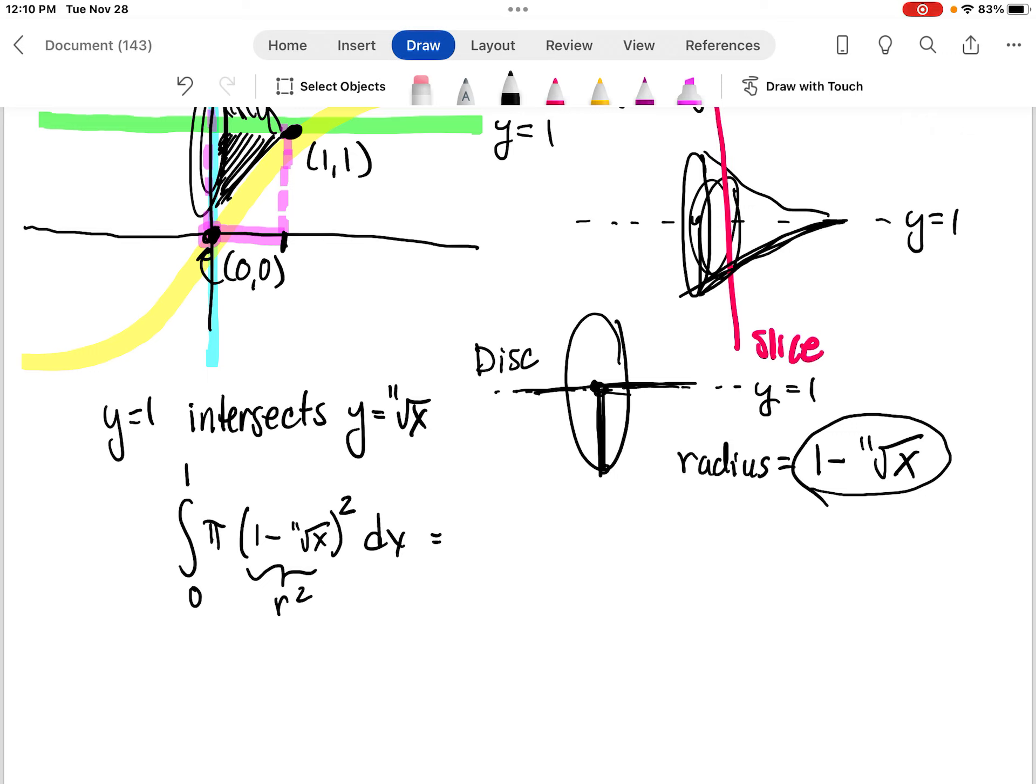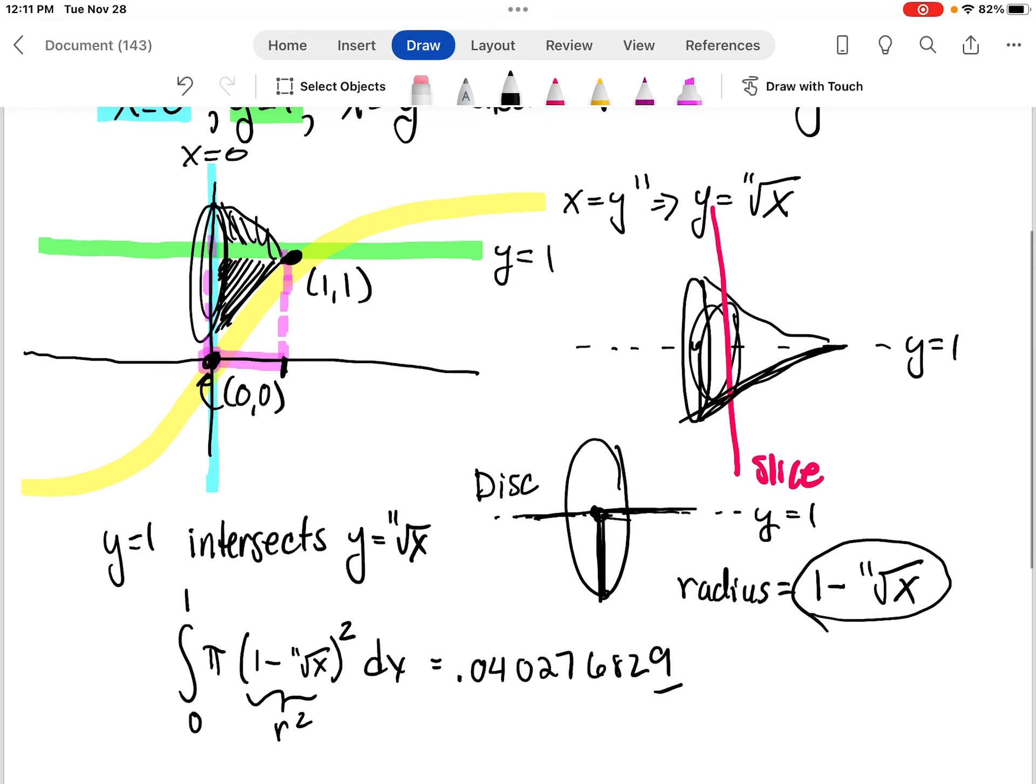So at this point in the course, I feel pretty comfortable that you'll be able to integrate that by yourself. When you do that, check to make sure you get the right answer. But when you do that, you should get 0.040276829. Let's just round it there because it goes on quite a bit.